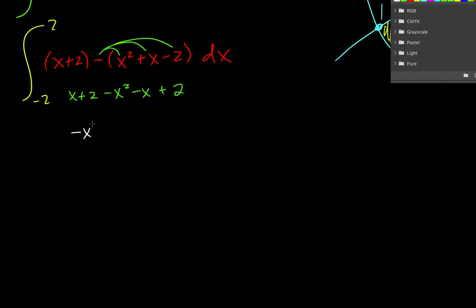Now I haven't taken an integral yet. I'm going to simplify this before I do that. So I get negative x squared. And then x and negative x, those cancel. And then 2 and 2 makes 4.